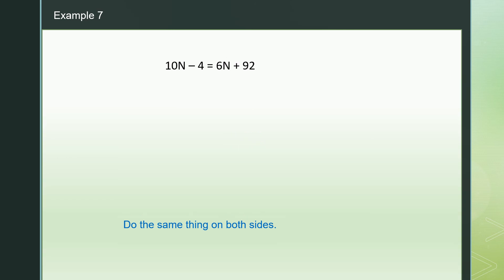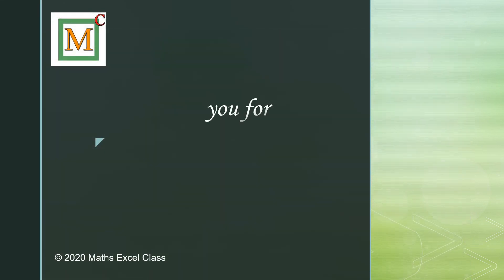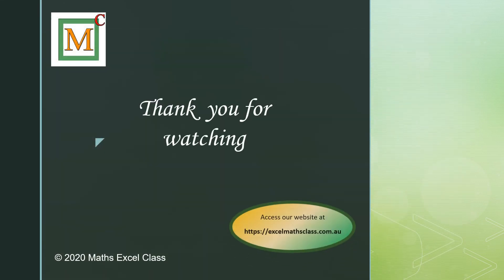10n minus 4 equals 6n plus 92. We have more n on the left, so on the right I don't want 6n — I minus 6n: gone. On the left: 10n minus 6n is 4n. I don't want minus 4, so I plus 4: gone. On the right: 92 plus 4 is 96. So 4n equals 96. I divide by 4 on both sides: 4n divided by 4 is n, 96 divided by 4 is 24. n equals 24.